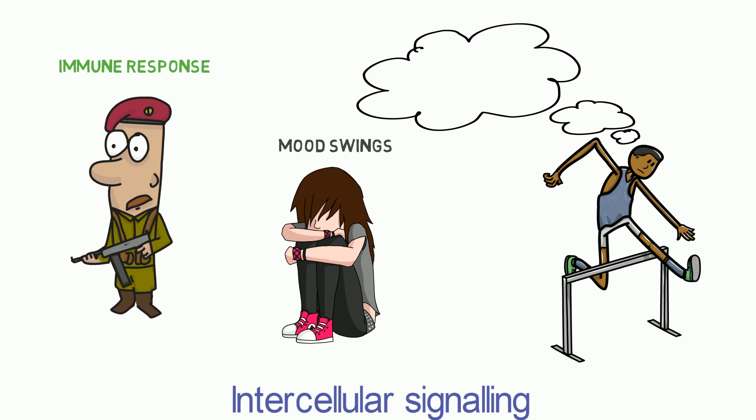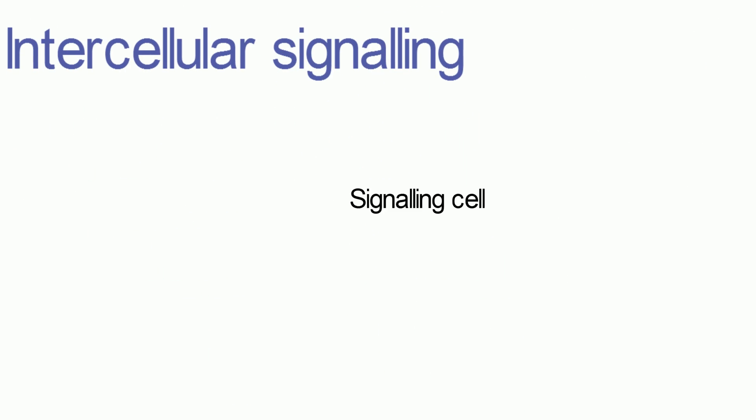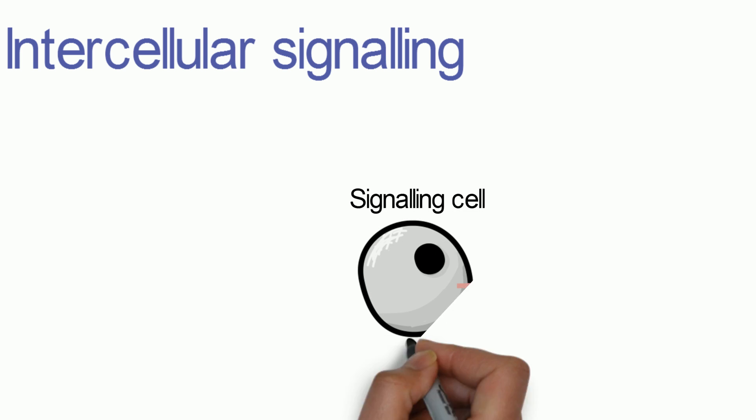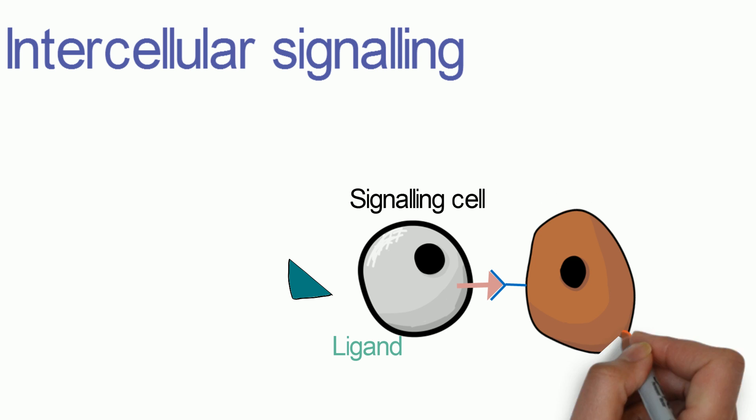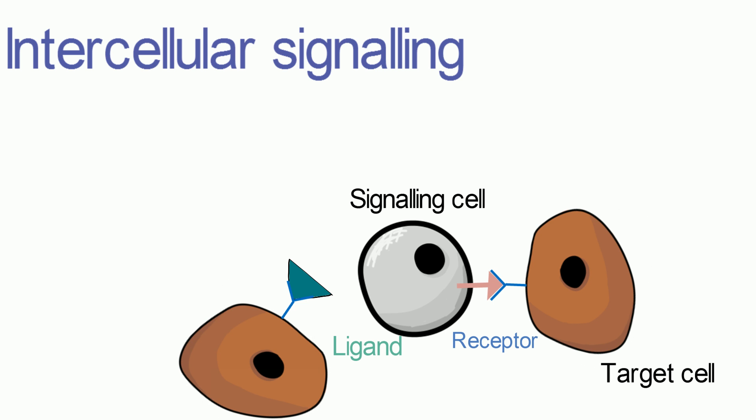So how exactly do cells communicate? Intercellular signaling starts off with a signaling cell which displays or releases signal molecules known as ligands. The ligands bind to their specific complementary receptor that is expressed on the surface of the target cell, thereby transmitting the information and causing changes in the target cell.